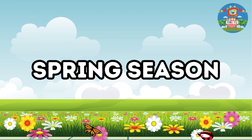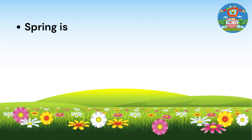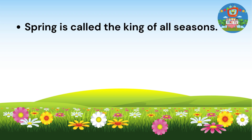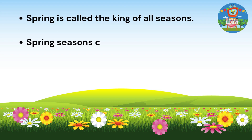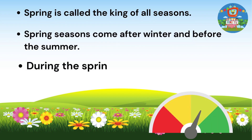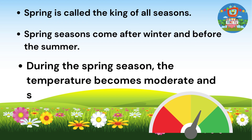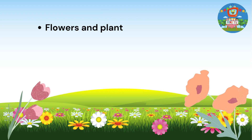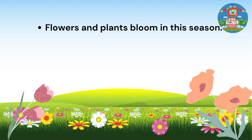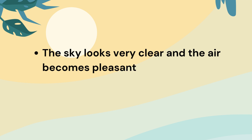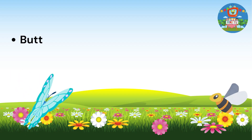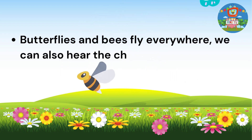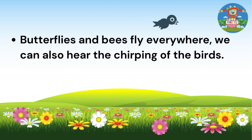Spring Season. Spring is called the king of all seasons. Spring season comes after winter and before the summer. During the spring season, the temperature becomes moderate and suits every living being. Flowers and plants bloom in this season. The sky looks very clear and the air becomes pleasant and calm. Butterflies and bees fly everywhere. We can also hear the chirping of the birds.